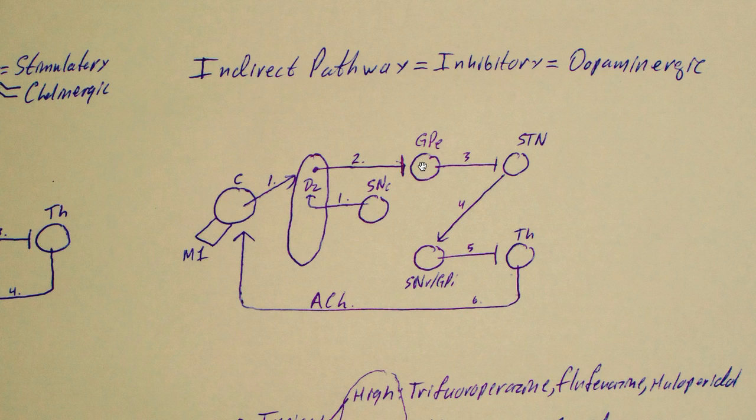So the globus pallidus externa is no longer going to carry out process number three here, so it no longer inhibits the subthalamic nucleus. If the subthalamic nucleus is disinhibited, that means it can carry out process number four, which is stimulating this SNR GPI.